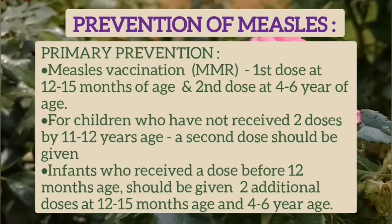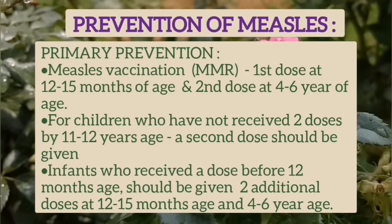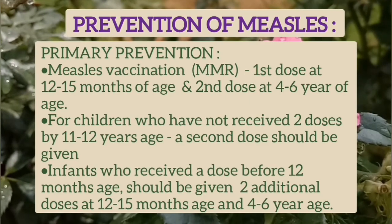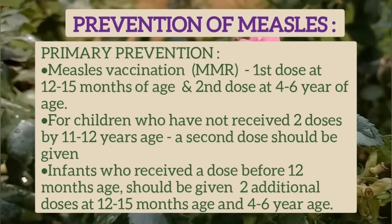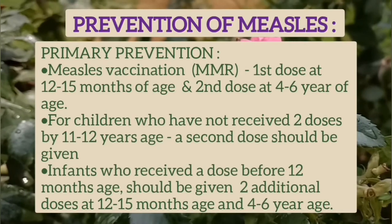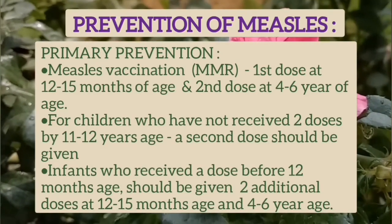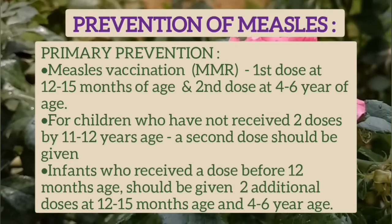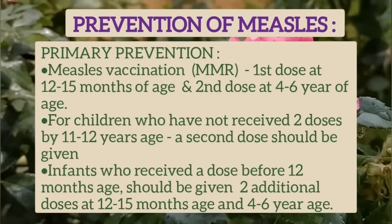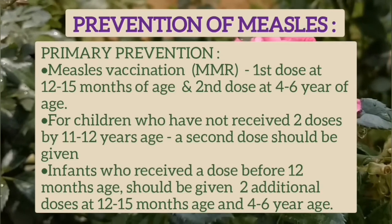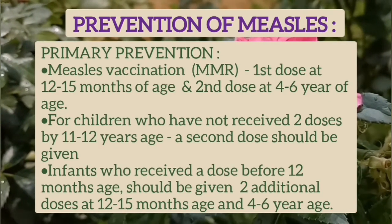Primary prevention is by measles vaccination. The first dose is given at 12 to 15 months of age and the second dose at 4 to 6 years of age. For children who have not received 2 doses by 11 to 12 years of age, a second dose should be given. Infants who received a dose before 12 months of age should be given 2 additional doses at 12 to 15 months and at 4 to 6 years of age.